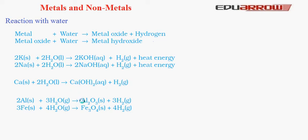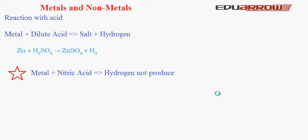Now let us understand how metals react with acid. When a metal reacts with dilute acid it gives salt and hydrogen. The general reaction is: Metal + Dilute Acid → Salt + Hydrogen. For example, Zn + H₂SO₄ → ZnSO₄ (zinc sulfate) + H₂. There is an exception: when a metal reacts with nitric acid (HNO₃), it does not give hydrogen gas because nitric acid is a very good oxidizing agent.